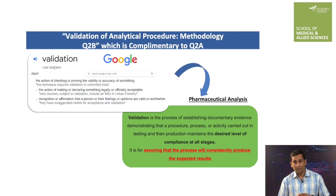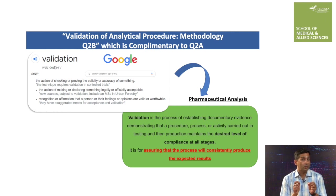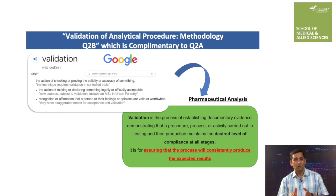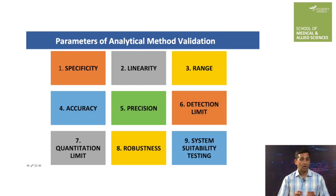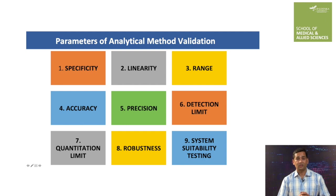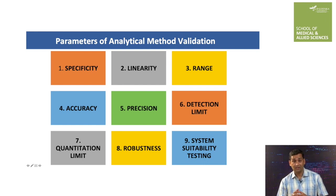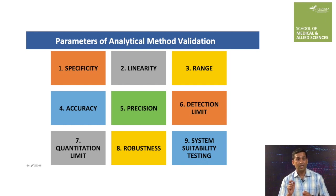Now I think you can appreciate that validation of analytical methods gives confidence about particular data or results to various stakeholders — from analytical chemists to regulatory authorities. I will now explain the various parameters of analytical method validation one by one. First one is specificity, second is linearity, third is range, fourth is accuracy, fifth is precision, sixth is detection limit, seventh is quantitation limit, eighth is robustness, and the last one is system suitability.